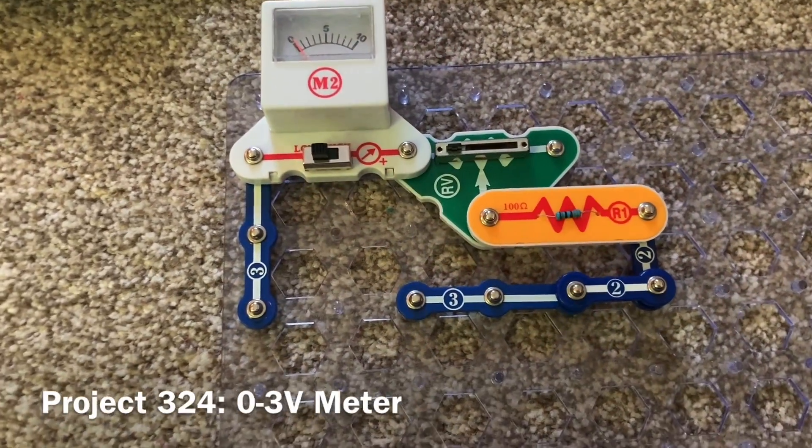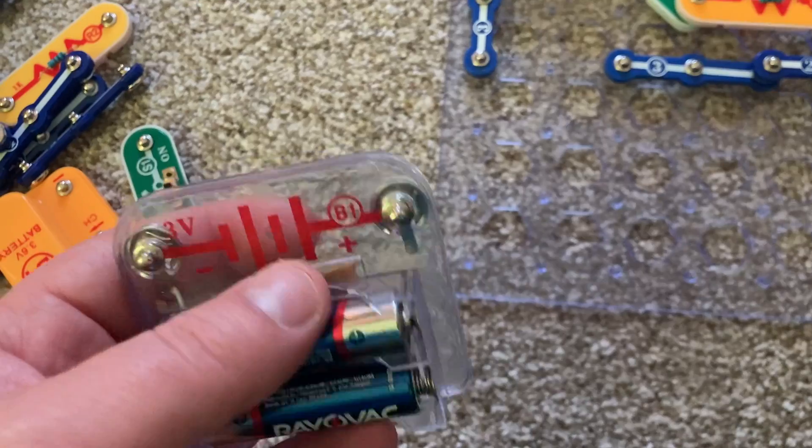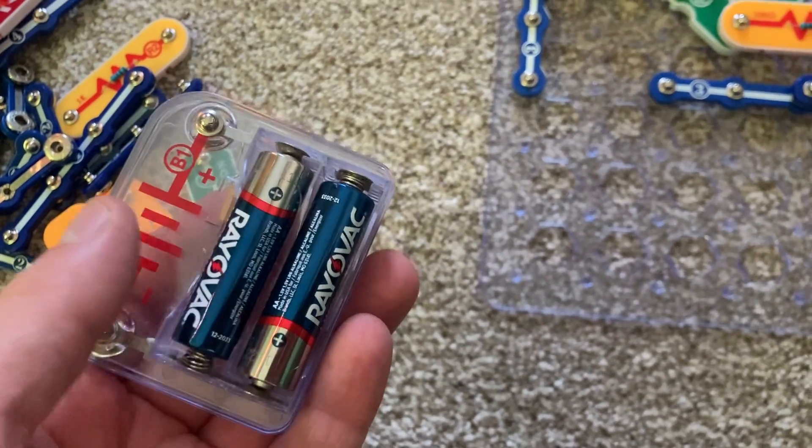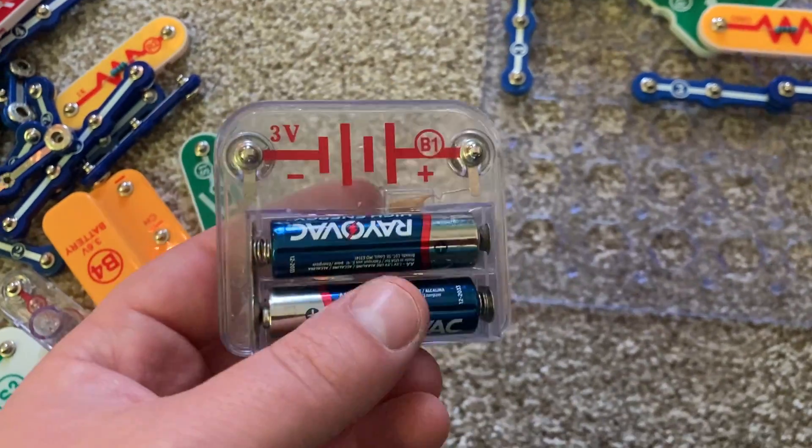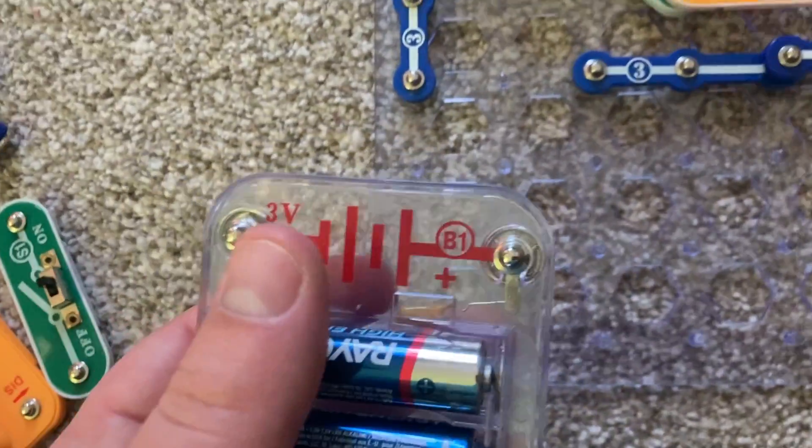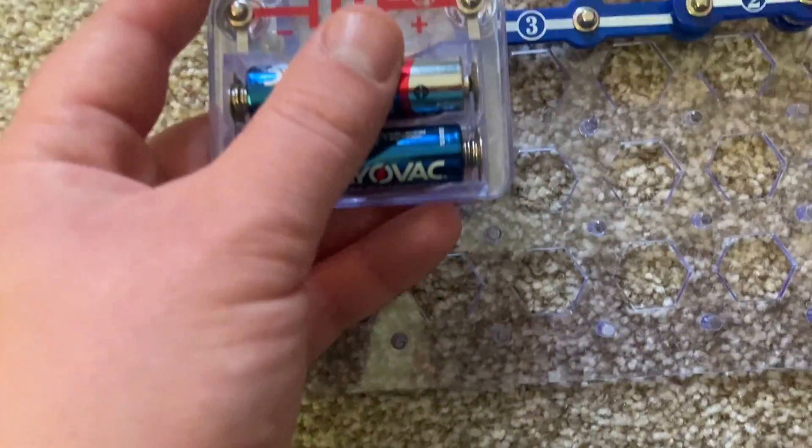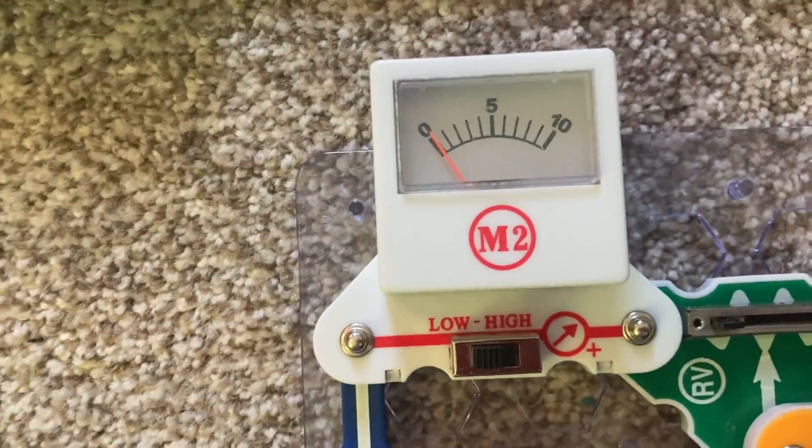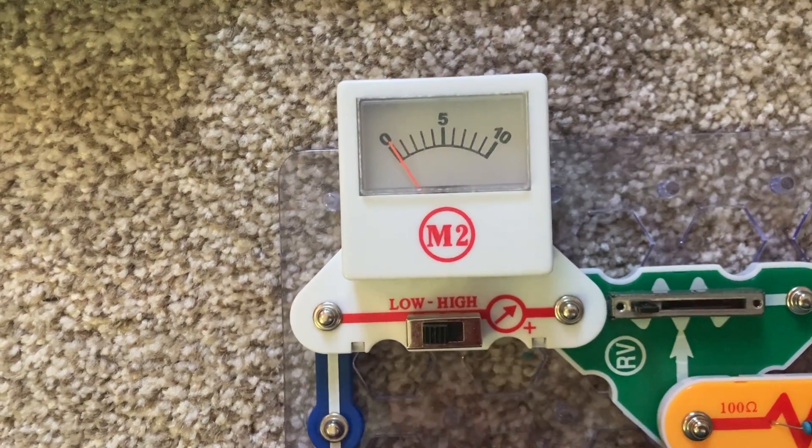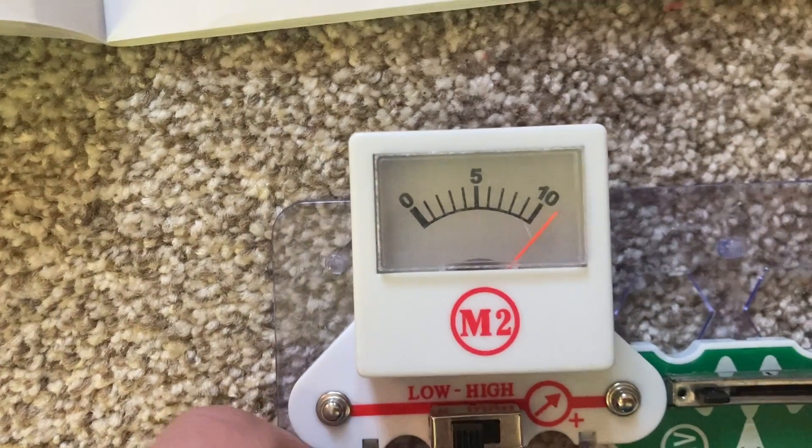This project allows you to measure how strong your batteries are. Now together, two AA batteries produce three volts of power. These batteries are brand new. They have never been used. I'm going to place the battery holder with them between these two points and watch the meter. It registers at full power.